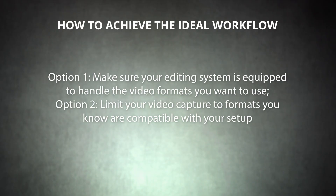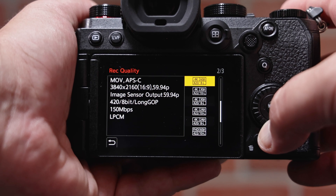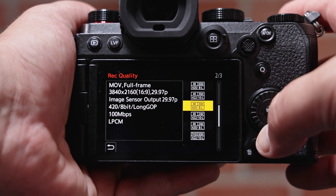So how do you avoid the pitfalls of transcoding and proxy editing? You have two options. You can make sure your editing system is equipped to handle the video formats you want to use, or you can limit your video capture to formats you know are compatible with your setup. With the first option, you're getting the best image quality possible without the hassle of transcoding. The second option means you're missing out on some of your camera's capabilities, but you still save time in post-production.